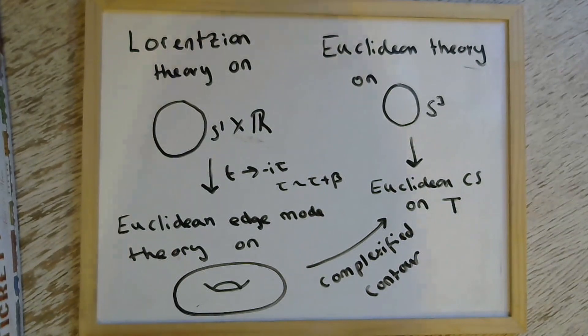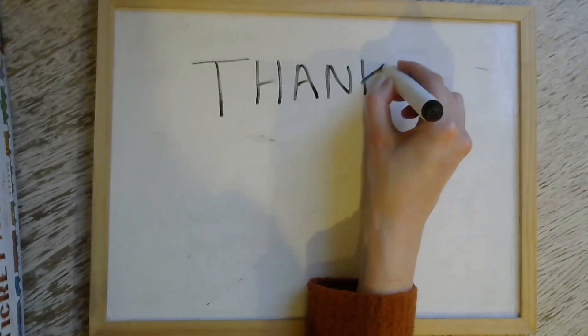And what we see is that if we complexify the contour of integration in the complexified U(1) theory in the path integral, we have an equivalent description between these two. We can find a map between these two descriptions. So we have successfully found a link between these two descriptions of de Sitter. Thanks very much for watching.